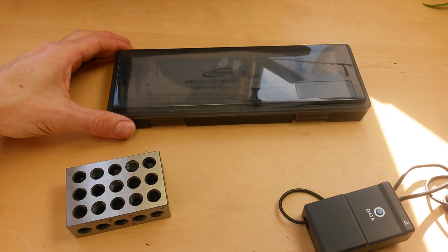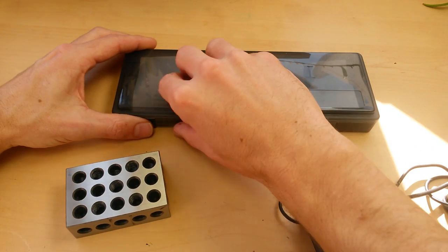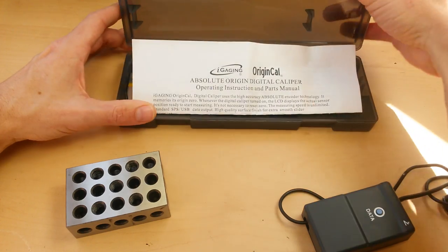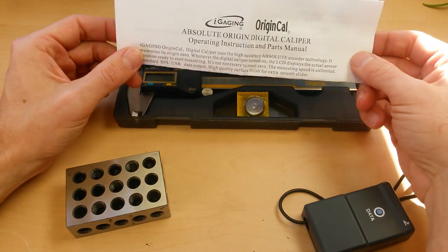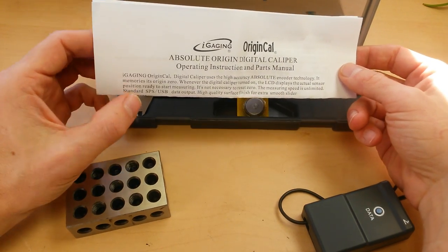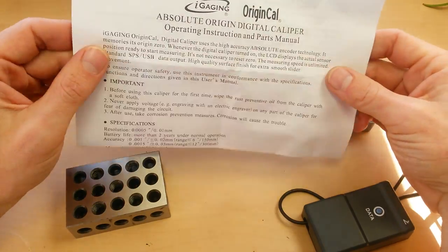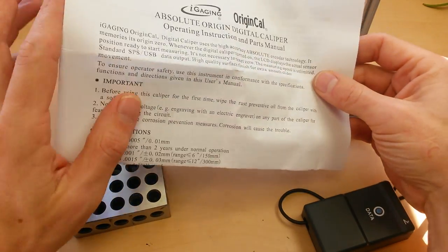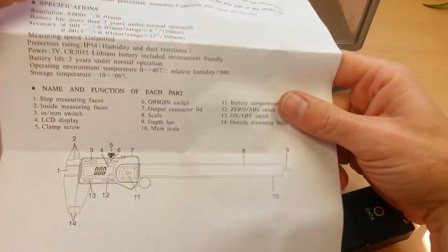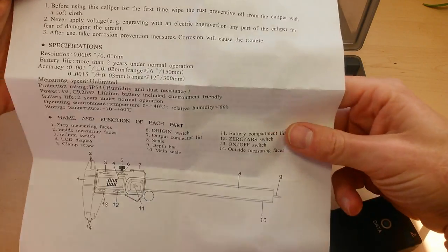Welcome to the digital caliper roundup series of videos. This video is going to be an unboxing and a full video review of the iGaging Origin Cal. This is iGaging's version of an Absolute Origin digital caliper, and this digital caliper actually did win the full roundup of seven digital calipers.